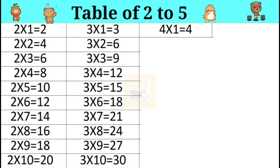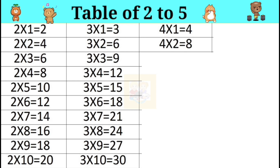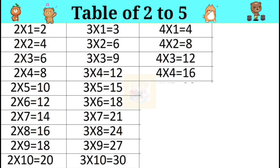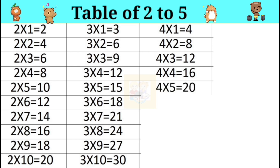Table of four. Four ones are four. Four twos are eight. Four threes are twelve. Four fours are sixteen. Four fives are twenty.